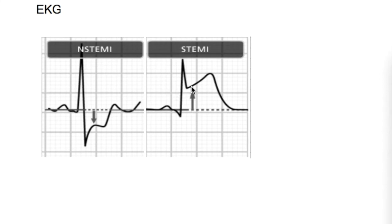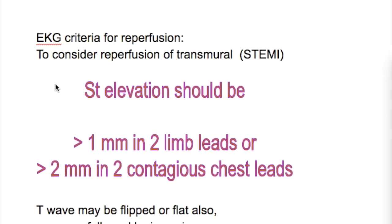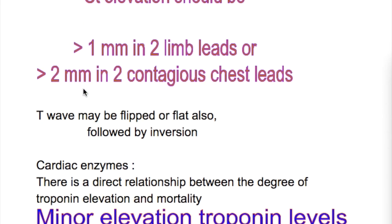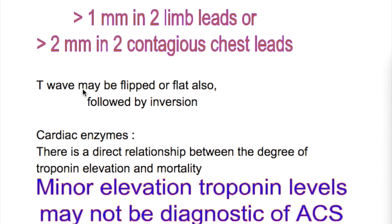Transmural has elevated ST segment on EKG, and subendocardial has depressed ST segment on EKG. For reperfusion of transmural infarction, ST elevation should be more than 1 mm in two limb leads, or more than 2 mm in two contiguous chest leads. T wave may also be flipped, flat, or followed by inversion.